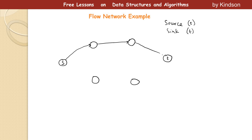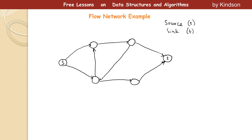Since it is a directed graph, there must be arrows pointing from node to node. All the edges between all the nodes must have an arrow or a pointer.